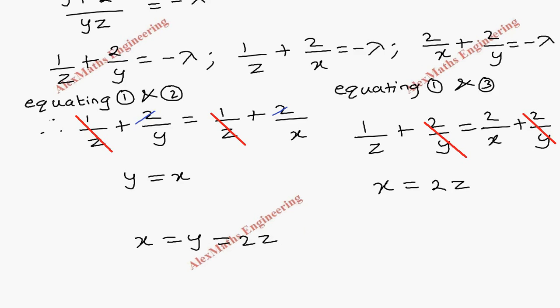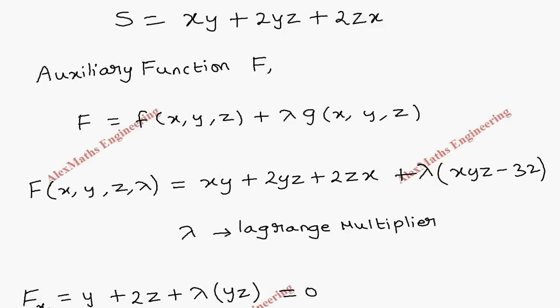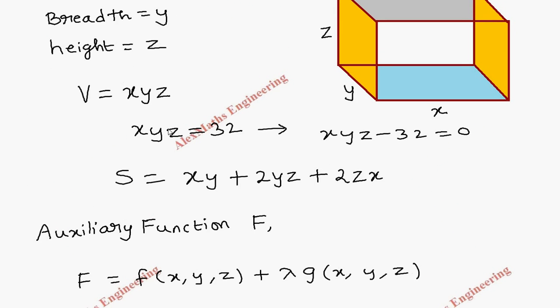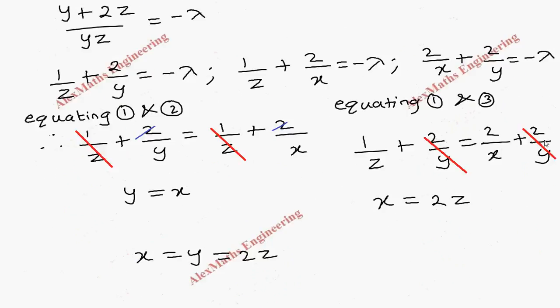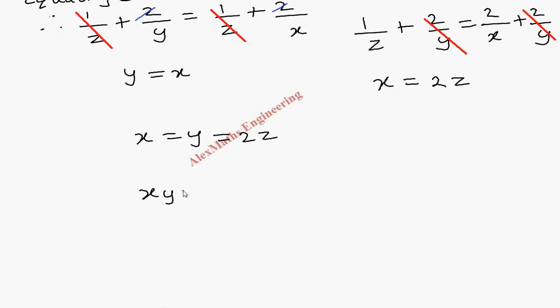Now this we are going to substitute in the condition, that is the volume xyz = 32. So now, already we know xyz = 32.